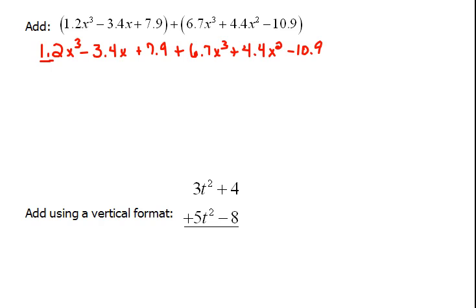So our highest power of x here is the x cubed. So we are going to combine that. 1.2 of those plus 6.7 of those would be 7.9 of the x cubes. Now we are done with the x cube. And we can move on to the next power of x, which would be the x squared. There are no other x squareds here to combine it with. So we just have plus 4.4 x squared.